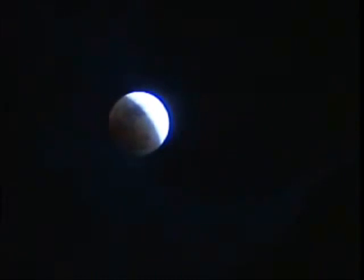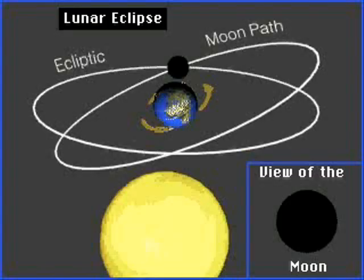If the orbit of the moon is such that it passes entirely into the ombra, the eclipse is called a total lunar eclipse.